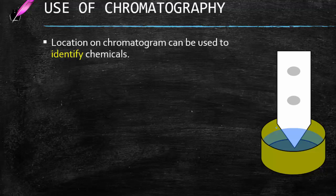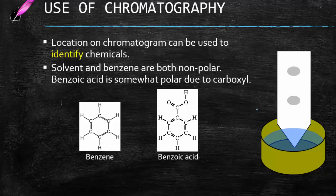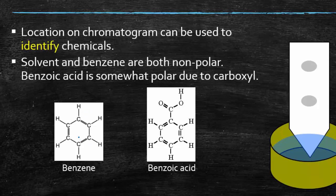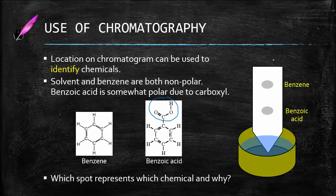Some uses of chromatography: it can be used to identify various chemicals based on knowing the chemical structure and solubility. Here are two molecules you may be familiar with — this benzene ring, which is a hydrocarbon and very nonpolar, and here is benzoic acid. The only difference is that benzoic acid has a carboxyl group, which is a polar group, so benzoic acid is more polar than benzene. We can tell that the spot traveling furthest is benzene, since if the solvent is nonpolar and benzene is nonpolar, it's going to travel the furthest. Benzoic acid is polar, so it won't go as far up with a nonpolar solvent. You can use this technique to identify chemicals.